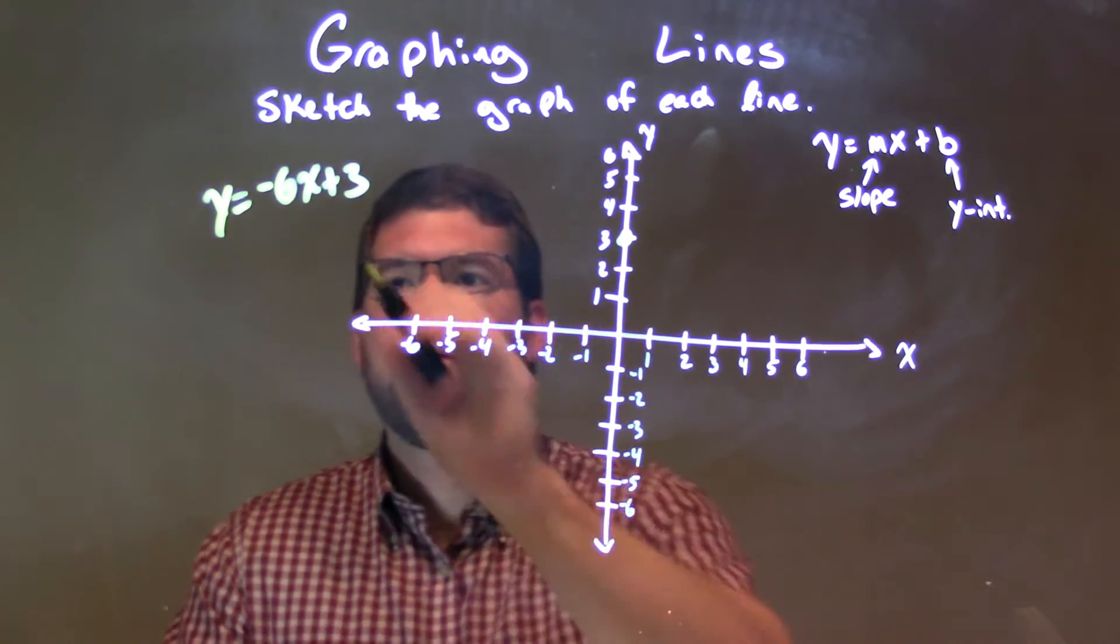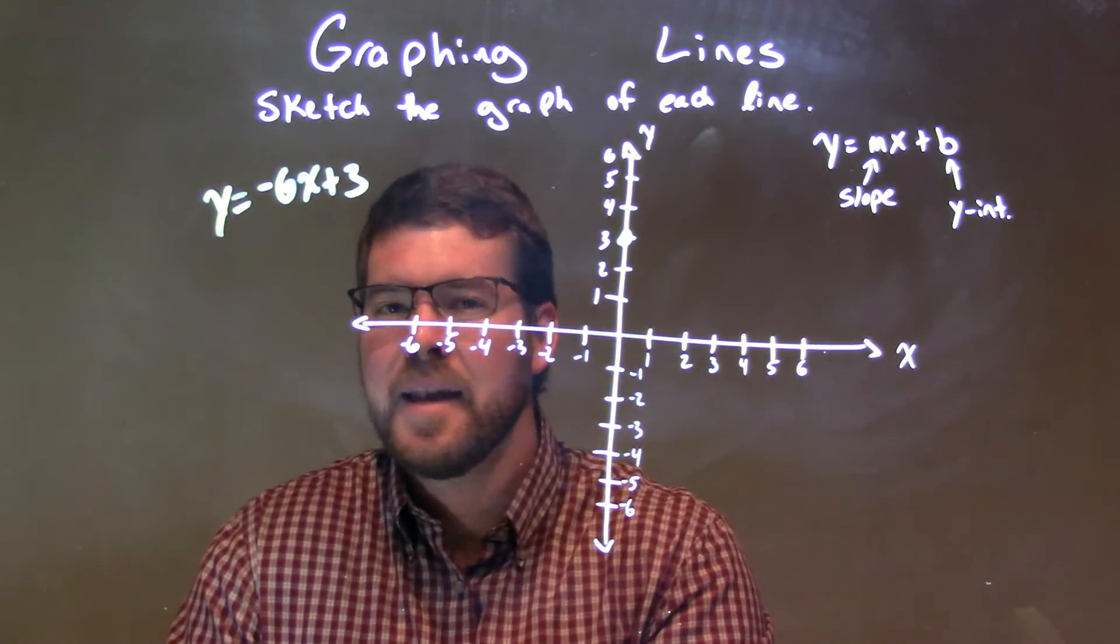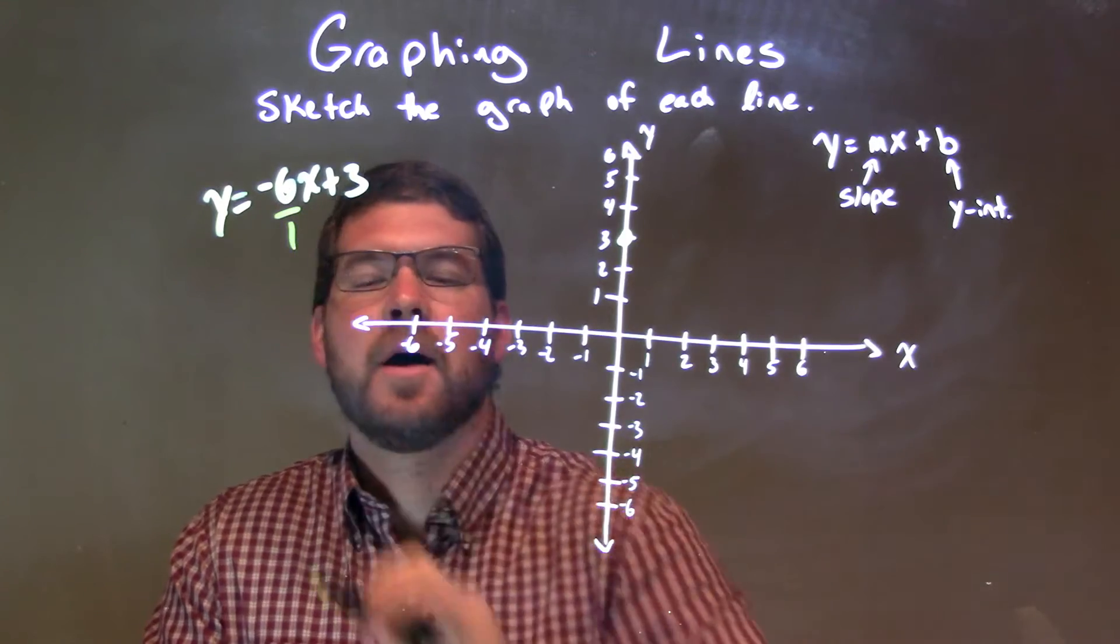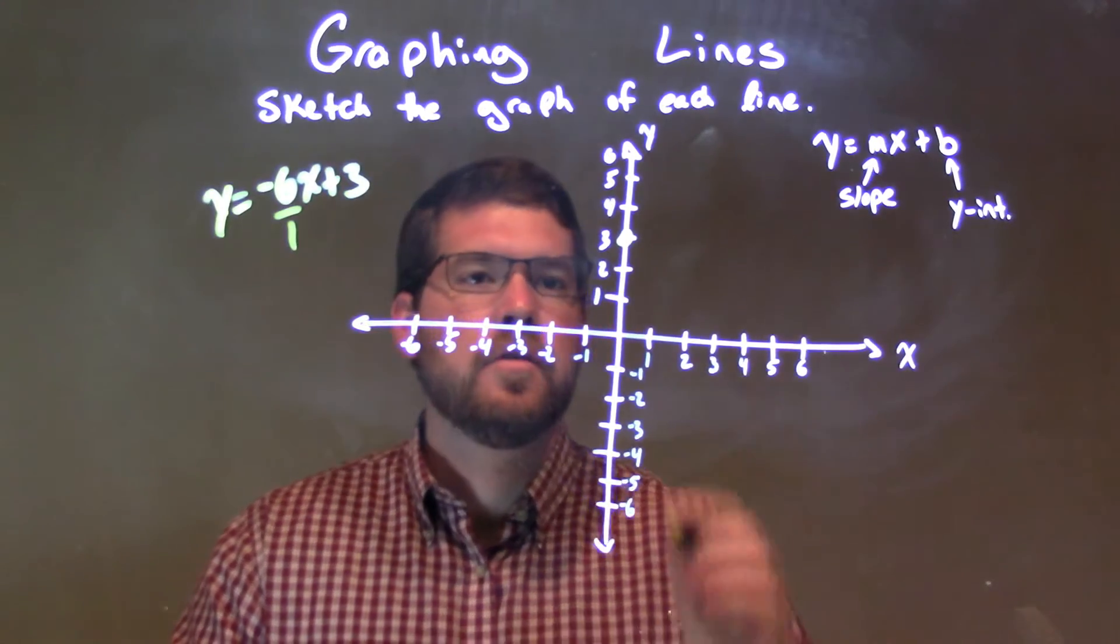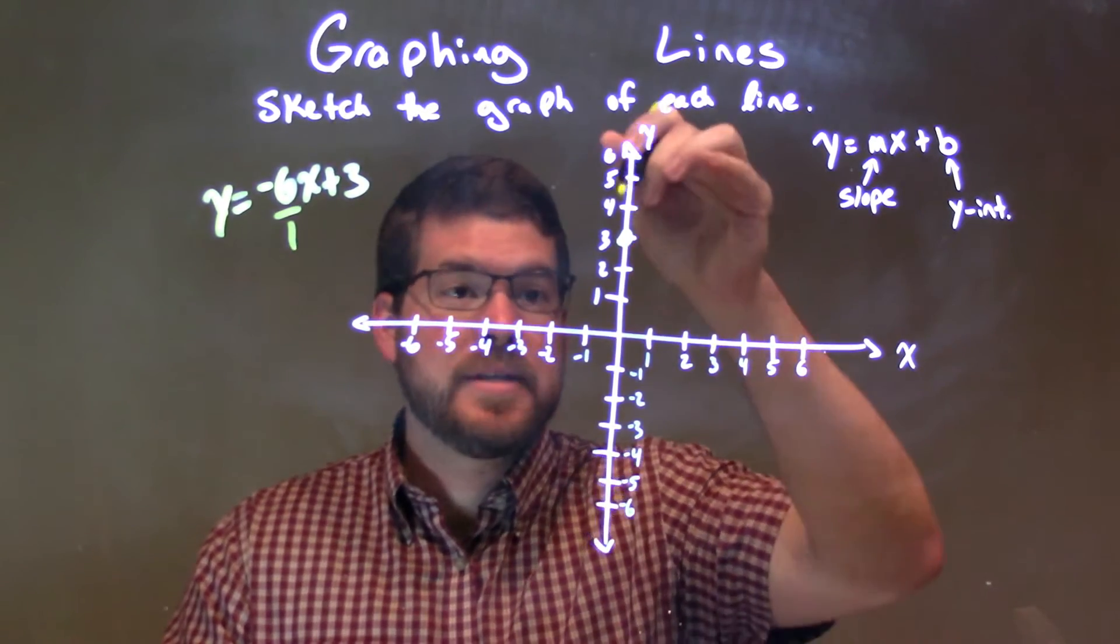Now, the next thing they tell us is our slope, negative 6. Well, that negative 6 is the same thing as negative 6 over a positive 1. So, negative 6 over a positive 1, we go down 6 units first.